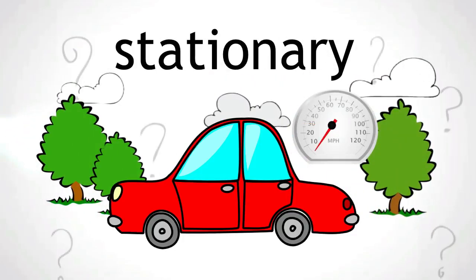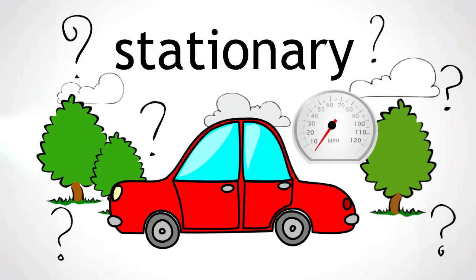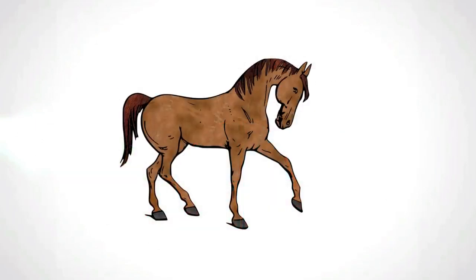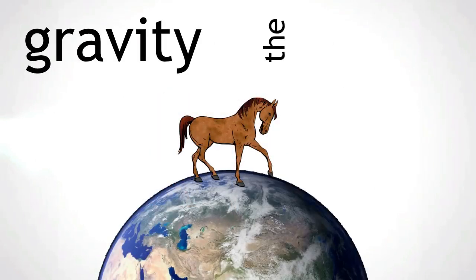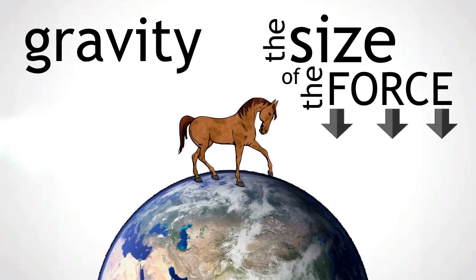But what do we mean by balanced forces? Let's look at the example of a horse. The first force we will consider is the force of gravity. This acts towards the centre of the earth. The size of the force of gravity is the horse's weight.